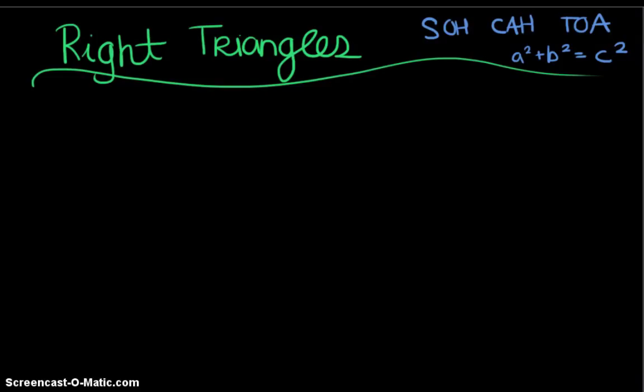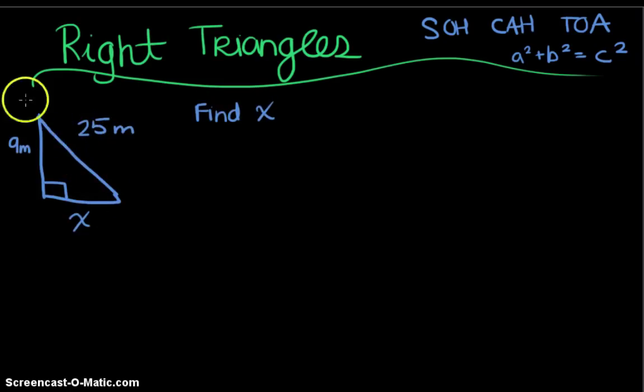Now let's look at some examples of how we might use right triangles in AP Physics. At the top I've written SOH-CAH-TOA to remember the trigonometric functions of sine, cosine, and tangent, and underneath that the Pythagorean theorem: a squared plus b squared equals c squared, which may help us find a missing side if the other two sides are known.